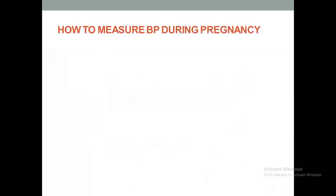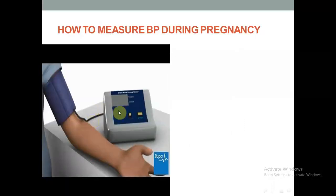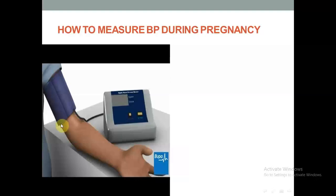How to measure blood pressure during pregnancy — this is very important. It is recommended to measure in a sitting position using the left arm mainly, with the sphygmomanometer, cuff, and instruments all at the level of the heart. If measured on both left and right, we consider the higher reading more reliable. The left arm reading is considered more reliable than lower measurements.